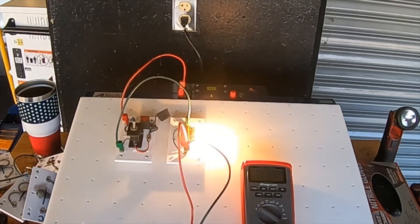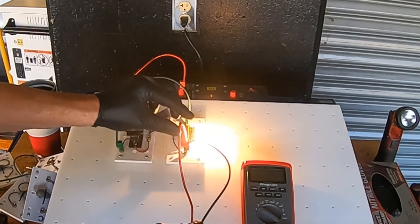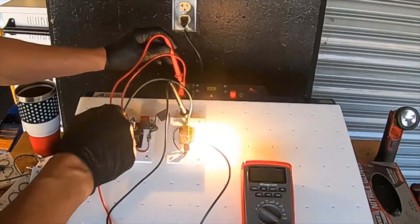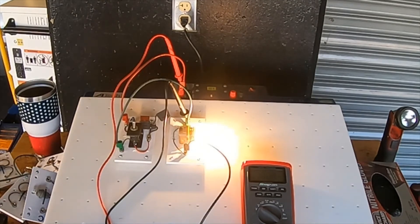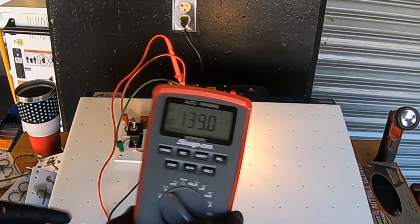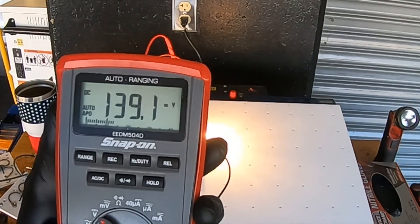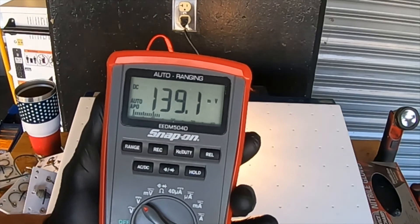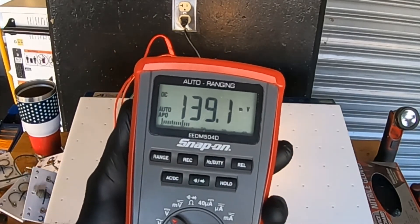We would do the same thing on the power side. And on the power side, we should never have more than 0.5 volts of voltage drop. Once again, if we look at the meter, we have 139 millivolts or 0.139 volts.